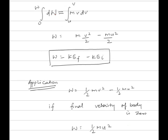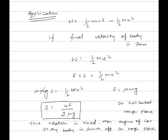This gives work done equals half m v² minus half m u², which is the change in kinetic energy: final minus initial kinetic energy. If the final velocity of a body is zero, meaning final kinetic energy is zero, then work done equals half m into u².